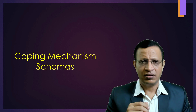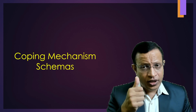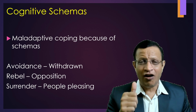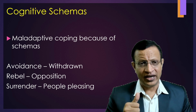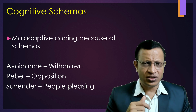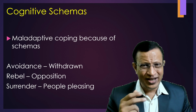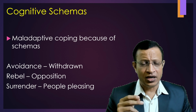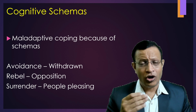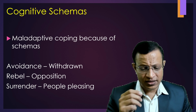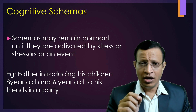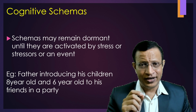Now, what are the ways to cope with schemas? There are two important ways: adaptive and maladaptive. In maladaptive coping, one response is avoidance — the person becomes withdrawn, will not interact, and will be alone most of the time. Another is rebellion or becoming oppositional — seeing the world as against them and needing to rebel. The third is surrender — becoming people-pleasing at the cost of one's own life and family. Schemas may remain dormant and get activated during stress or disasters.